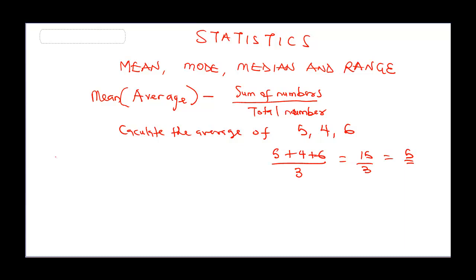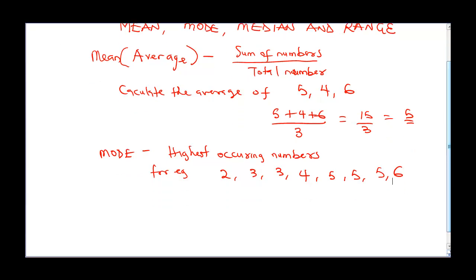Now, you've understood the concept of mean, let's go into mode. Mode means the highest occurring number. Which number repeats more times than the other number? For instance, for example, if you're giving 2, 3, 3, 4, 5, 5, 5, and 6. If you're asked to find the mode.